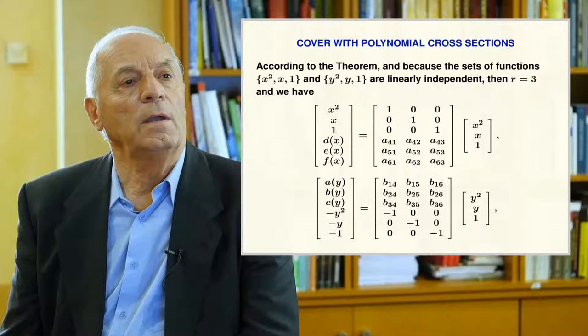In the right column matrix of the second equation, we include the three basic functions removing their signs. Since we have three basic functions from the first equation and three from the second, we have a total of six, which equals the number of terms in our sum of products equation. According to our theorem, we cannot include more. Next, we build the intermediate matrices, which are six by three matrices, in order to multiply the involved matrices correctly.